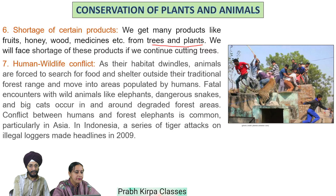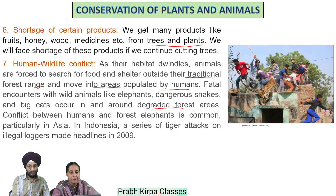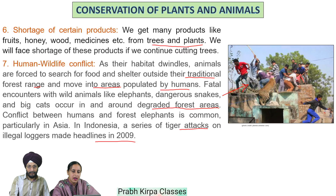Human-wildlife conflict is another consequence. As their habitat dwindles, animals are forced to search for food and shelter outside their traditional forest range and move into areas populated by humans. Fatal encounters with wild animals like elephants, dangerous snakes and big cats occur in and around degraded forest areas. Conflict between humans and forest elephants is common, particularly in Asia. In Indonesia, a series of tiger attacks on illegal loggers made headlines in 2009.